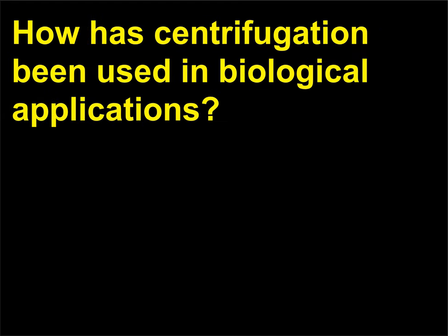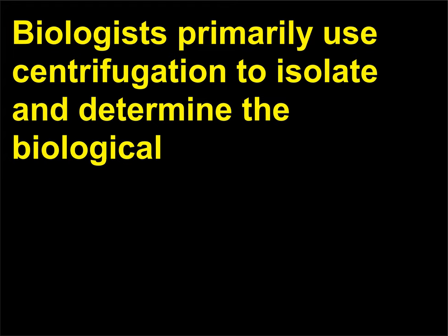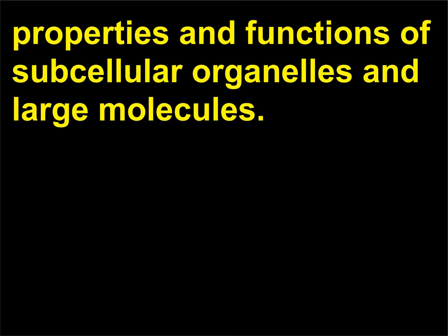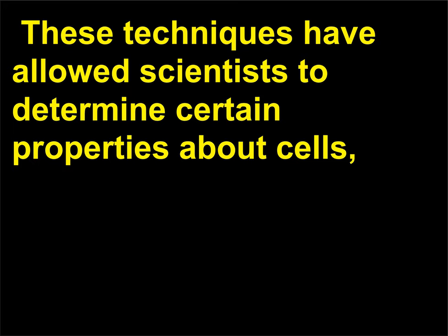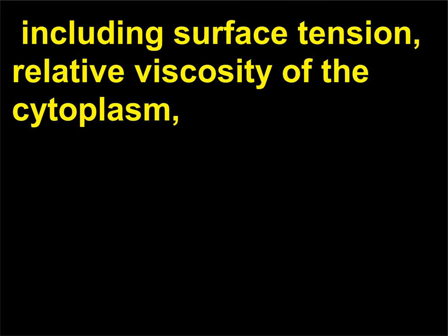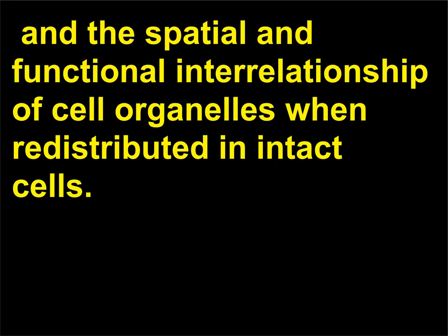How has centrifugation been used in biological applications? Biologists primarily use centrifugation to isolate and determine the biological properties and functions of subcellular organelles and large molecules. They study the effects of centrifugal forces on cells, developing embryos, and protozoa. These techniques have allowed scientists to determine certain properties about cells, including surface tension, relative viscosity of the cytoplasm, and the spatial and functional interrelationship of cell organelles when redistributed in intact cells.